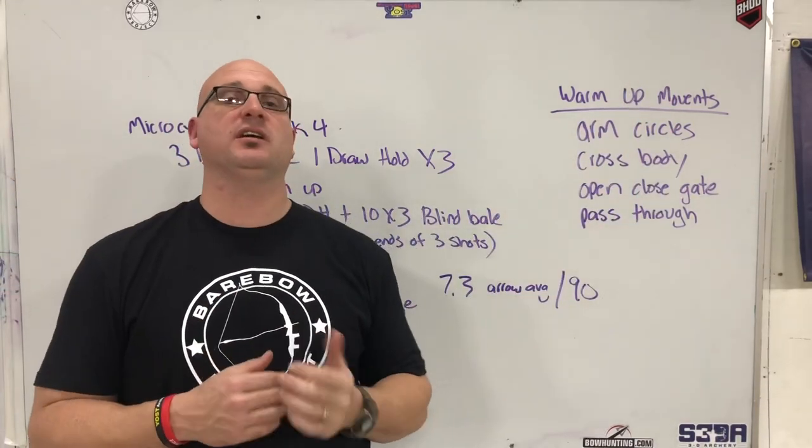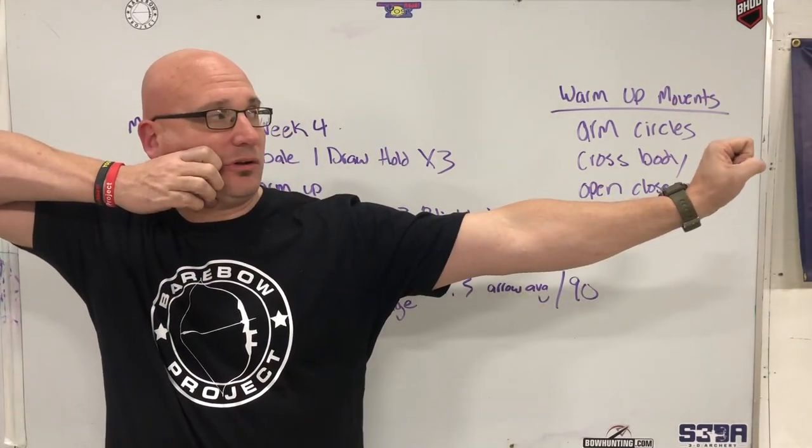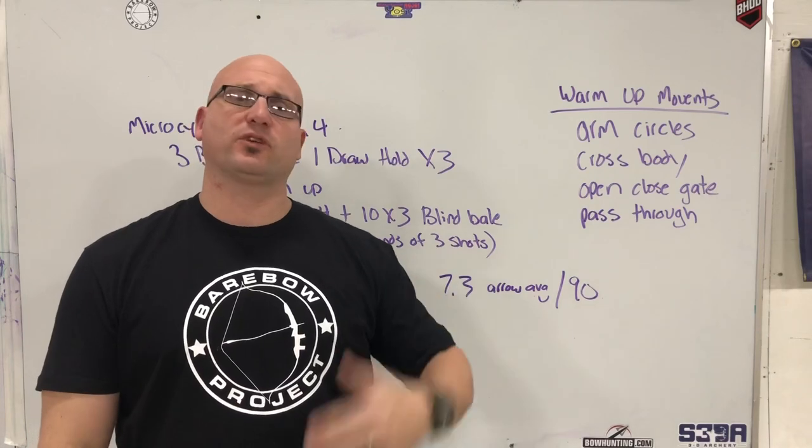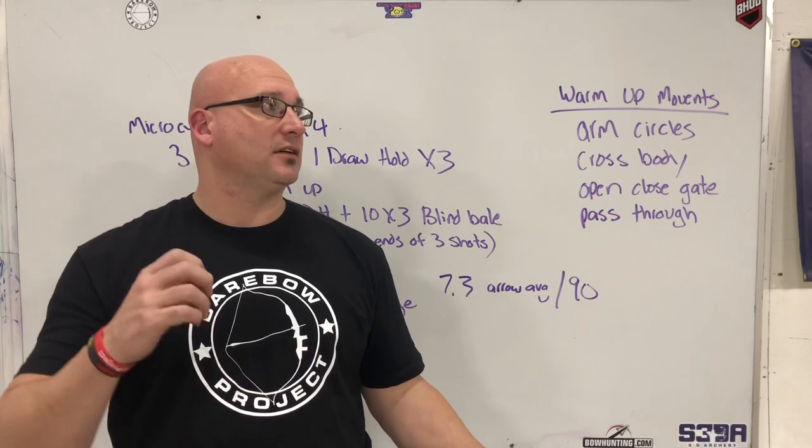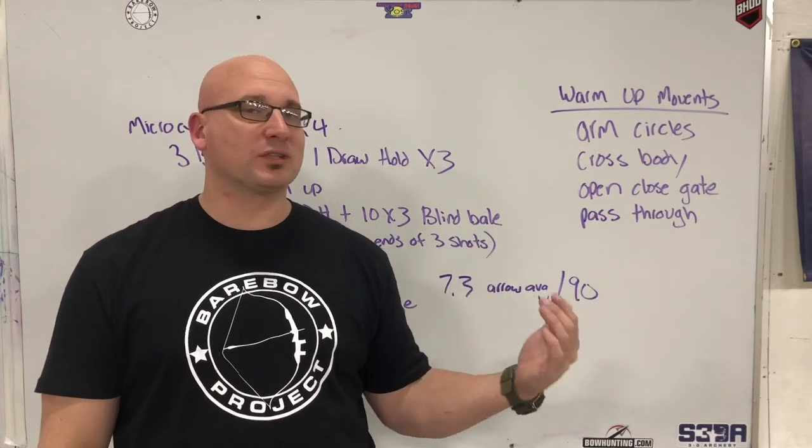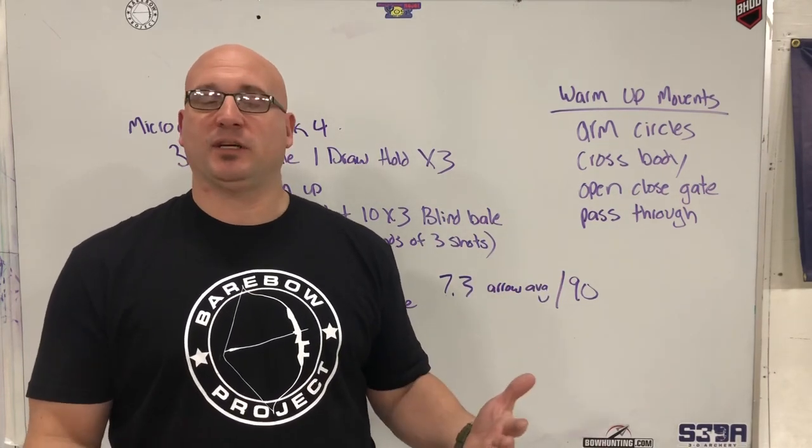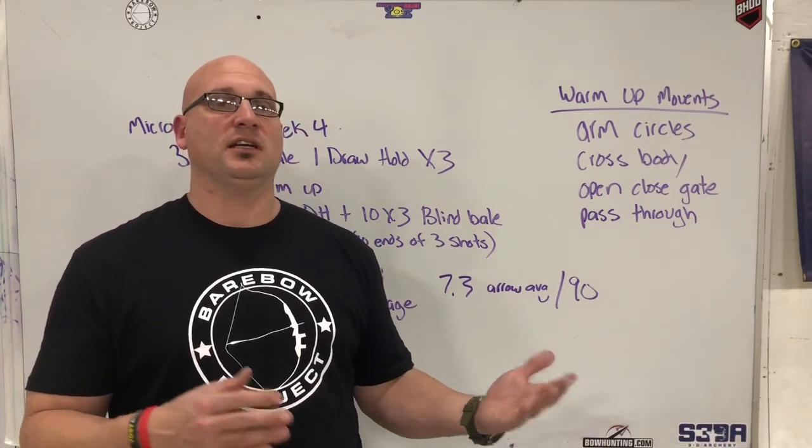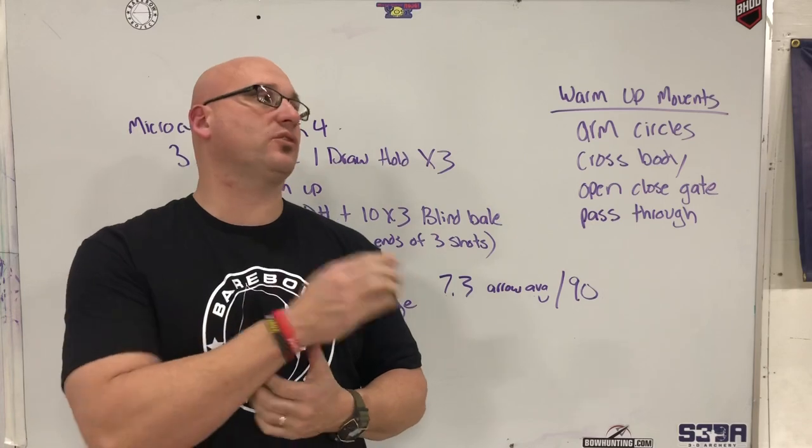Also make sure that within your rounds, you have the time and ability to do draw holds while you're shooting for score. If a shot did not go correctly and you hit your anchor, did a drive by and it wasn't good, make sure that immediately you throw another arrow and draw back purposefully, do your draw hold, reinforce the right message, let down, relax, take a nice big deep breath, do four seconds in, four seconds out, four second hold, bring your heart rate down and run your shot the right way.